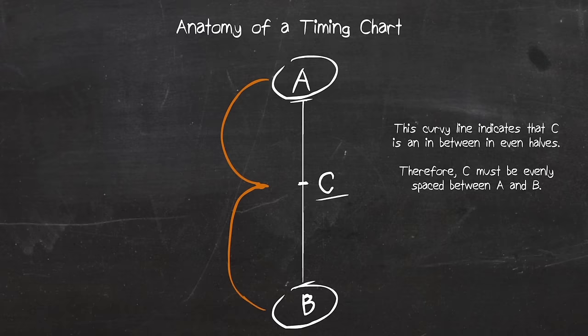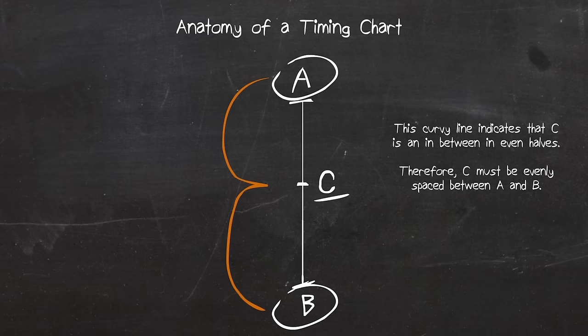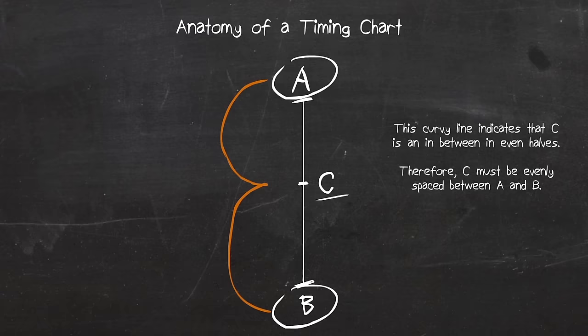When you see two curvy lines connect like this, with the middle meeting at our breakdown here, this is indicating that C is an even half of A and B. These two specific curves means that it is an even half. Therefore, frame C must have its lines evenly spaced from A and B.